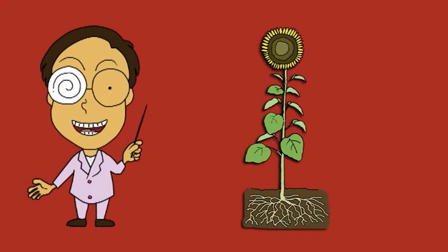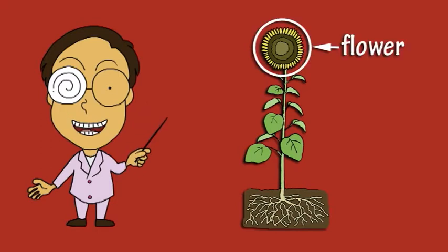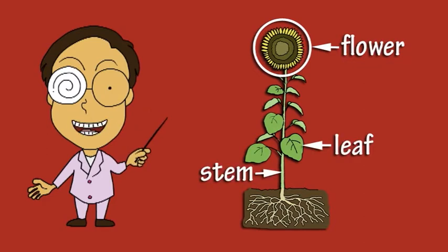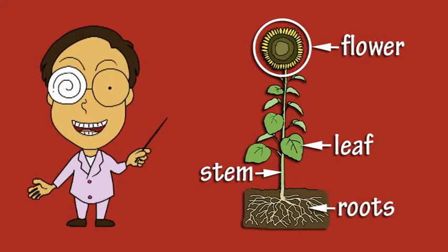Can you identify the different parts of a plant? A flower. A leaf. The stem. And the roots.